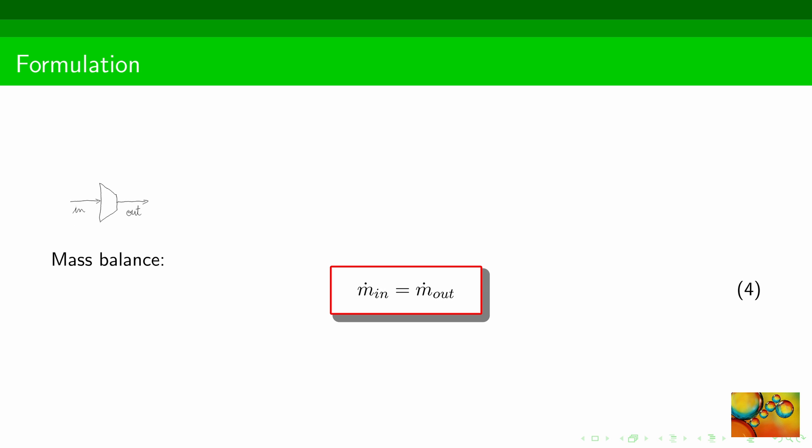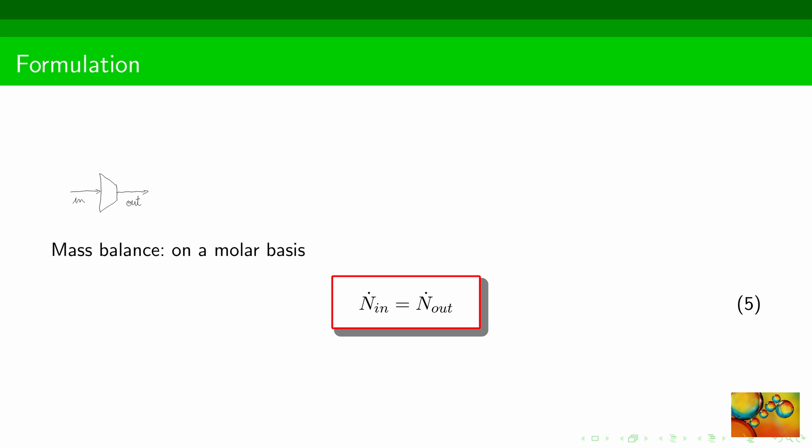In summary, from the mass balance, we find out that the input and output flow rates are equal. Then, in the absence of chemical reactions, the molar flow rates in and out are also equal.